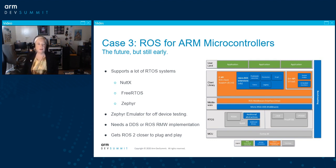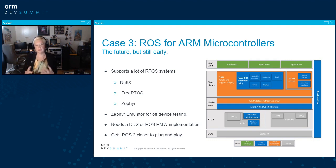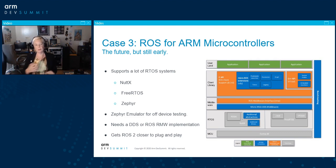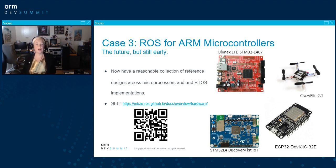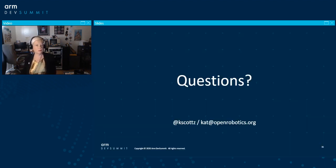Right now micro-ROS supports lots of different RTOS systems: it can run on NuttX, FreeRTOS, and Zephyr — and the Zephyr emulator basically works for off-device testing. You need to pick a ROS middleware implementation; look at the documentation for that. It gets you to a really nice ROS plug-and-play interface fairly quickly. There are examples of different boards currently running this, including the Crazyflie drone and the ESP32, plus a few other dev kits. I've also got a link to the documentation. Does anyone have any questions?